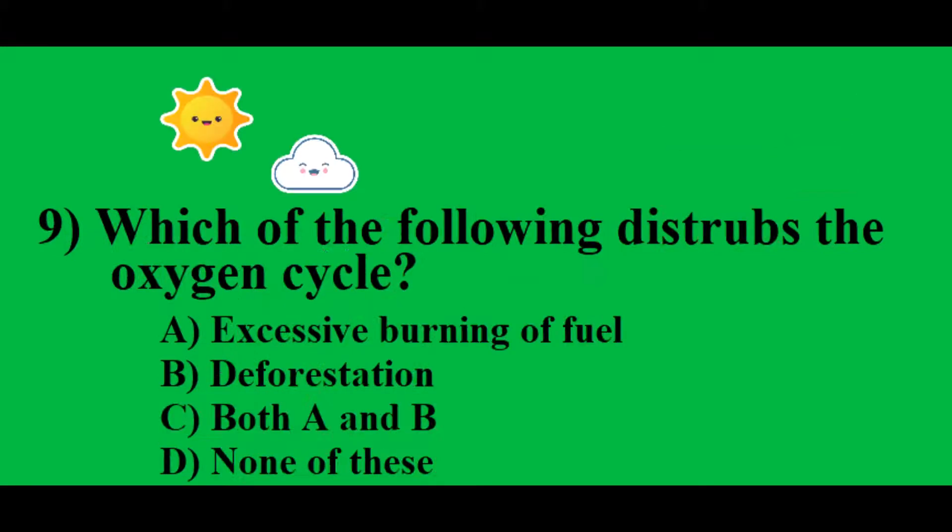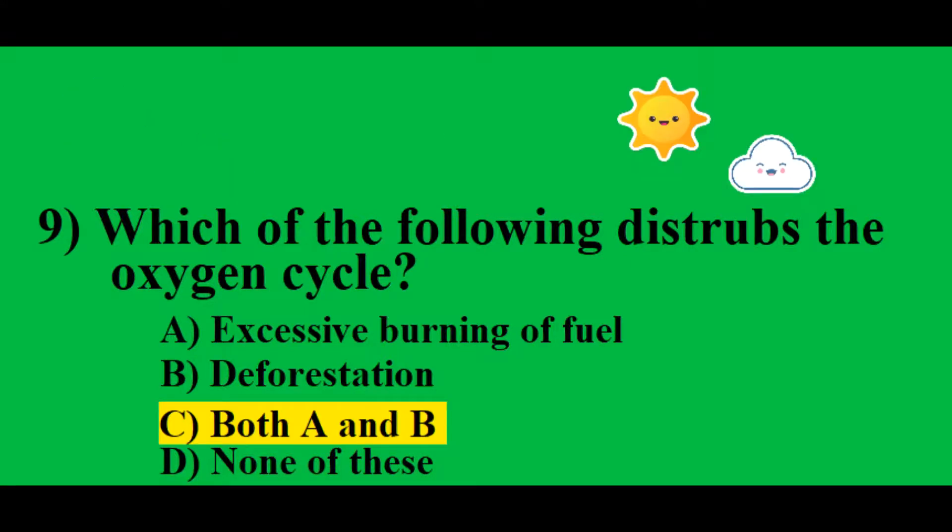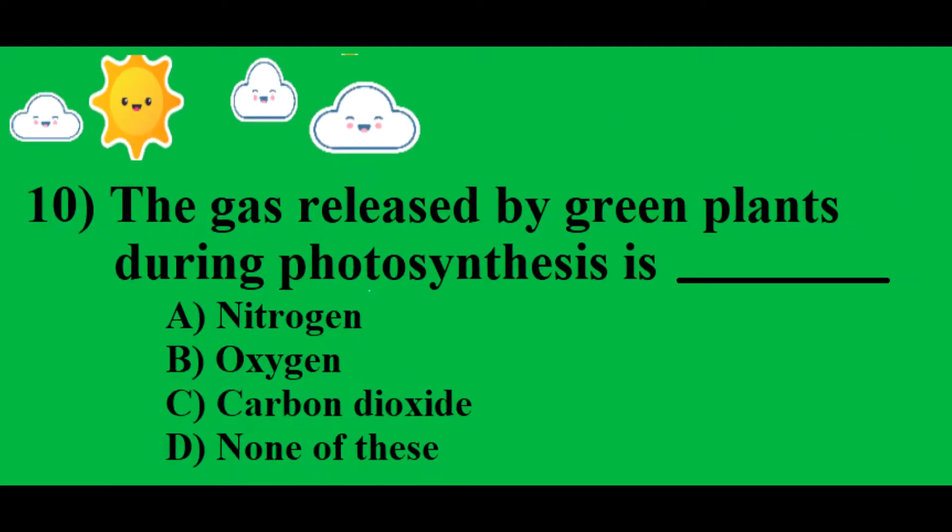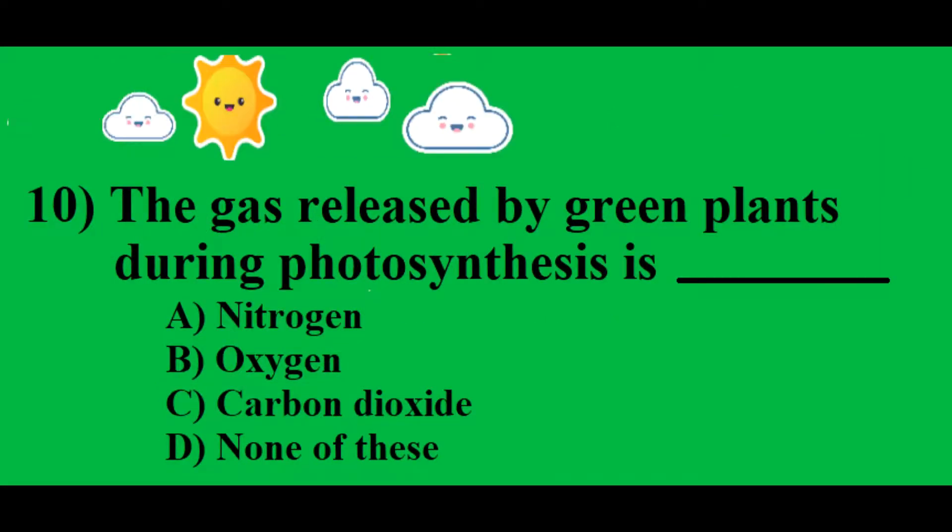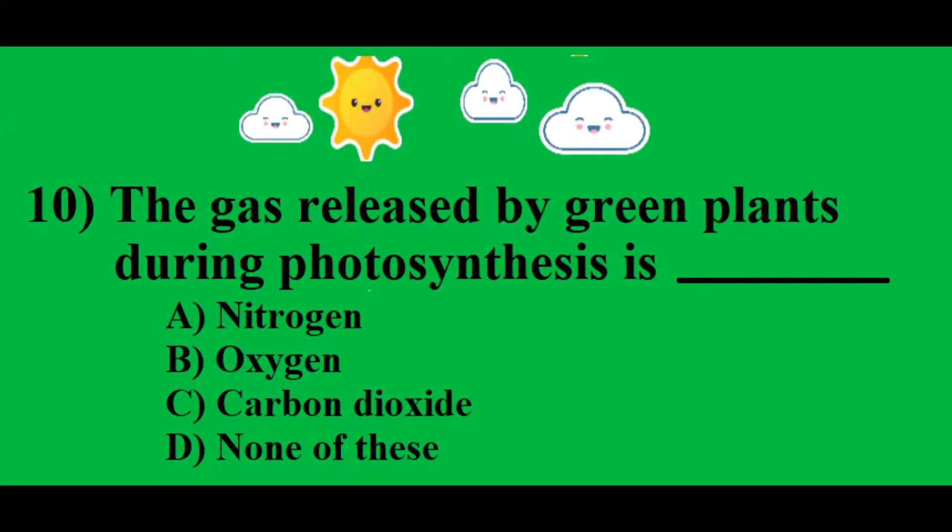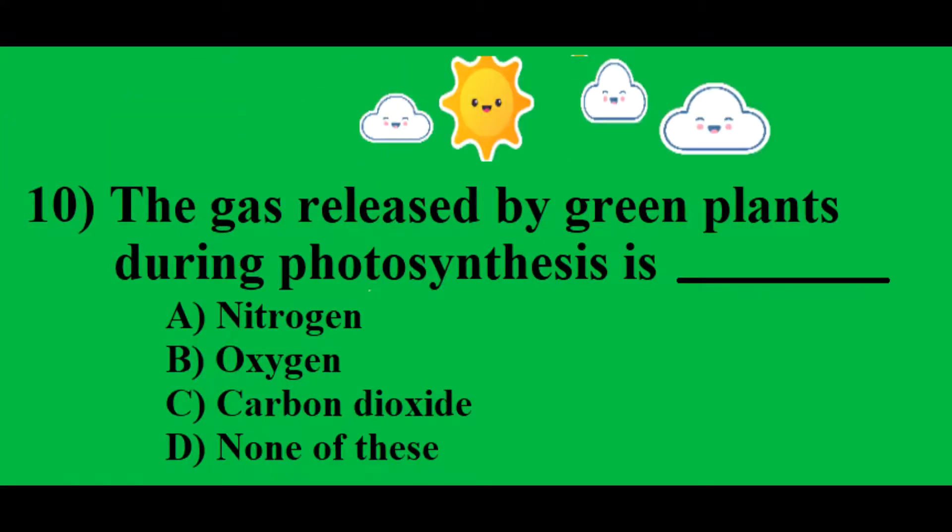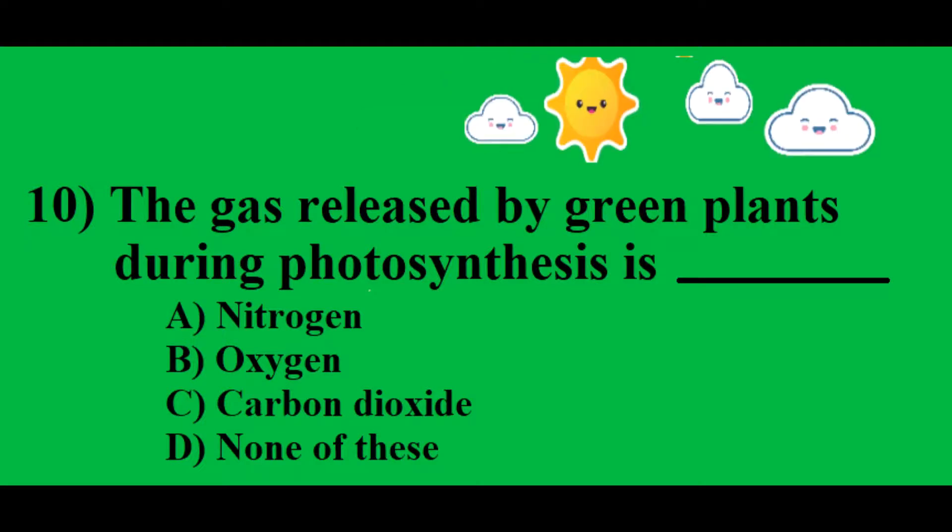Ninth question: Which of the following disturbs the oxygen cycle? C) Both A and B. Tenth question: The gas released by green plants during photosynthesis is C) Oxygen.